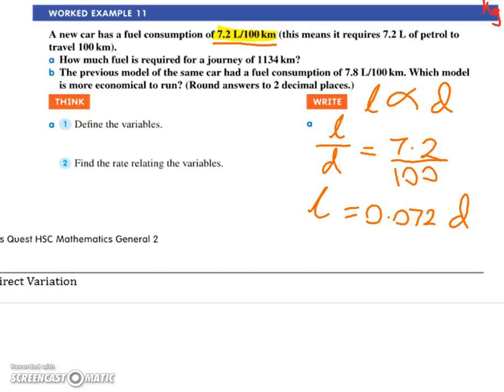All right, so we now have to find a journey of 1,134 kilometers. So what do we do? So now we're just going back to that thing. We've already written down our formula. We've written down what we know. We're now substituting in and solving. So you should have got 81.65 liters. All good with that?